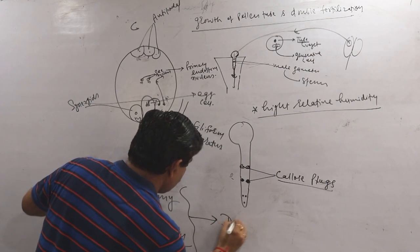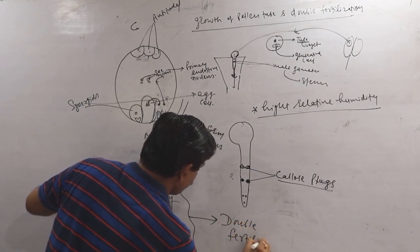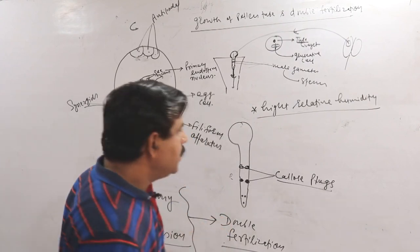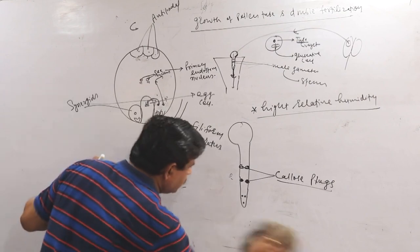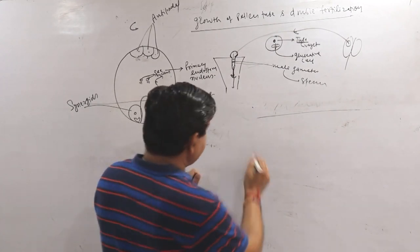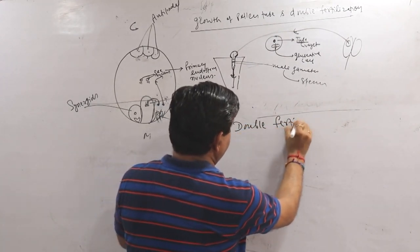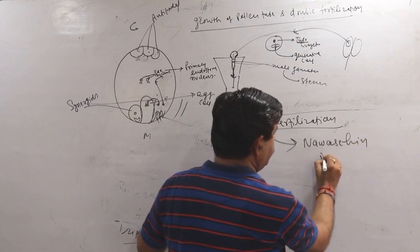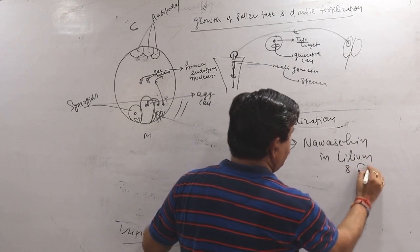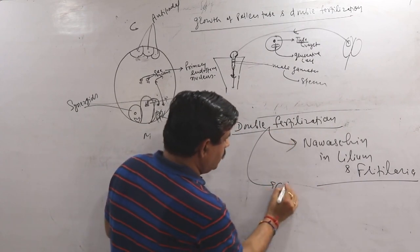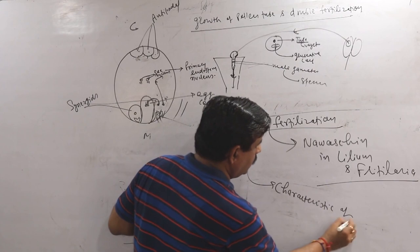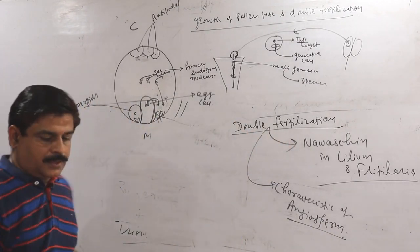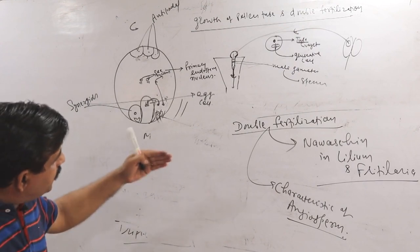Together, syngamy and triple fusion constitute double fertilization. Double fertilization is the characteristic feature of angiosperms. It was discovered by Nawaschin in Lilium and Fritillaria. Post-fertilization changes will be discussed in the next lecture.